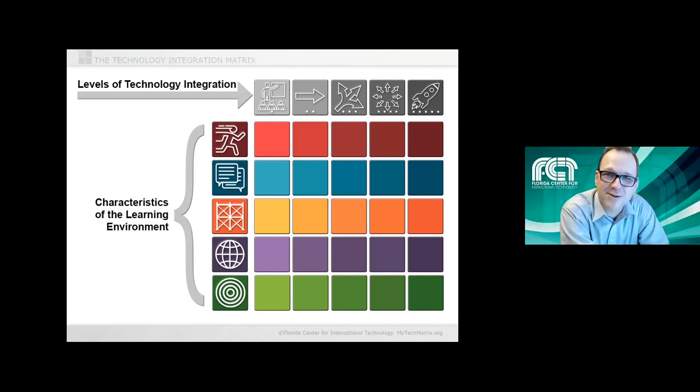If I do a classroom observation and I'm looking at, maybe it's entry and adoption across the board, I would begin the conversation by describing back to the teacher what I saw in the lesson, how I understand that matching up with the matrix, and then talk about the choices that the teacher made getting there. Because the levels that we saw in that lesson might be exactly what's appropriate for the pedagogical needs of the students that day.